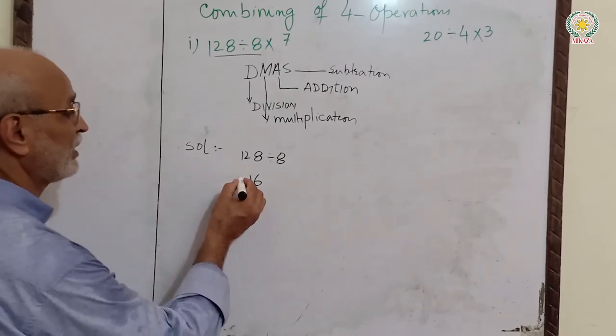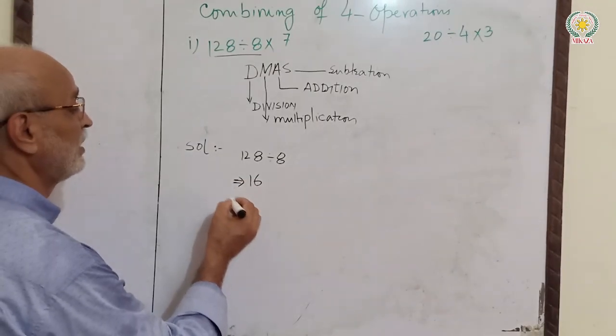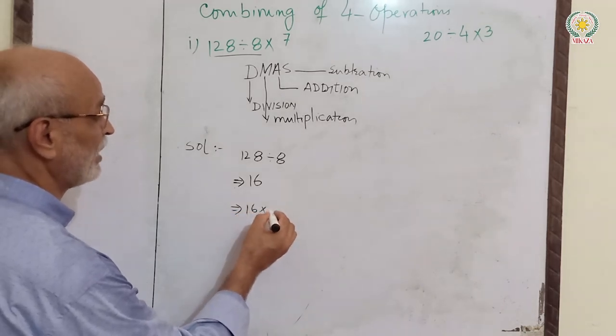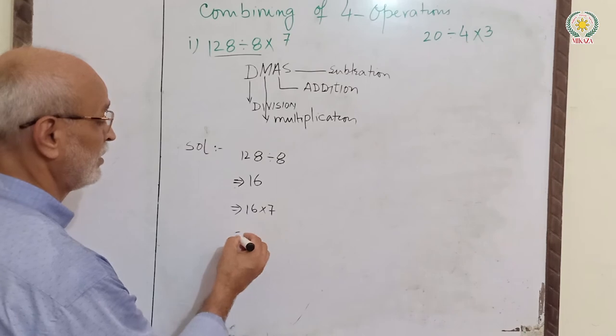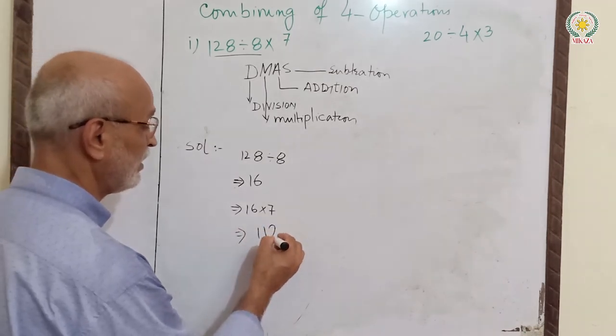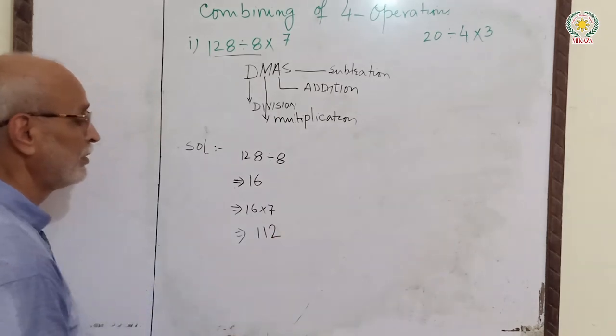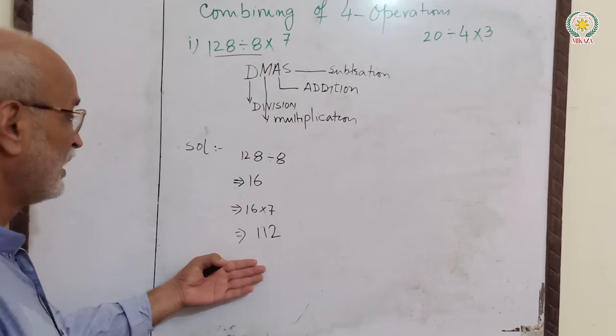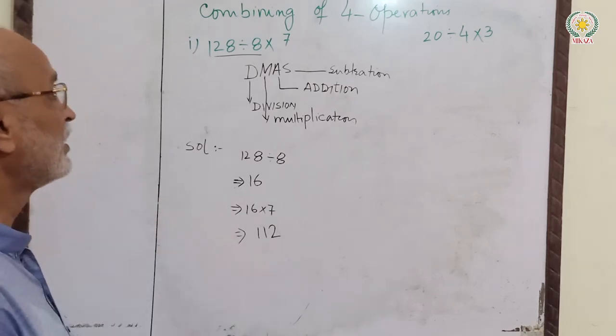Next step: 16 multiplied by 7 equals 112. So our answer is 112.